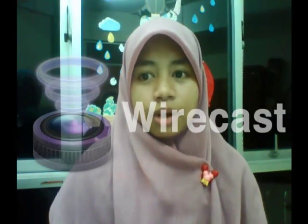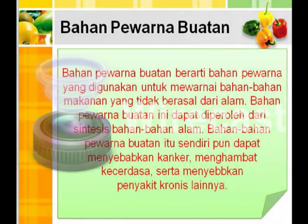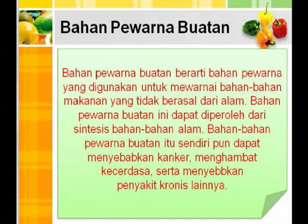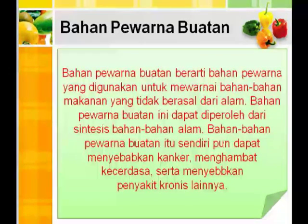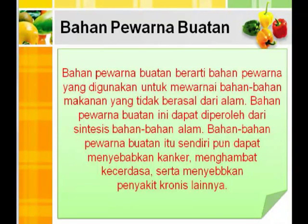Zat atau bahan pewarna buatan yaitu bahan pewarna yang digunakan untuk mewarnai bahan-bahan makanan yang tidak berasal dari alam. Bahan pewarna buatan ini diperoleh dari sintesis bahan-bahan kimia. Bahan-bahan pewarna buatan dapat menyebabkan kanker, menghambat kecerdasan otak, serta menyebabkan penyakit kronis lainnya.